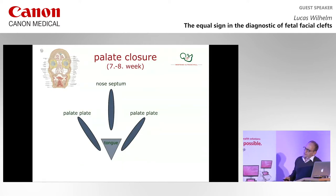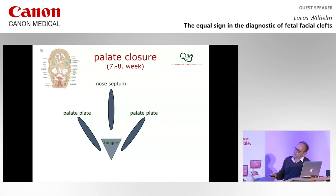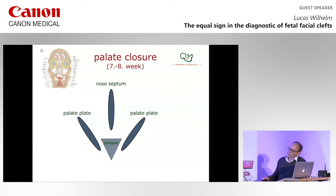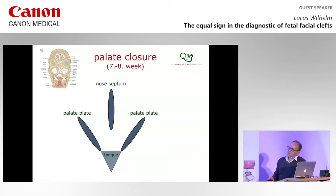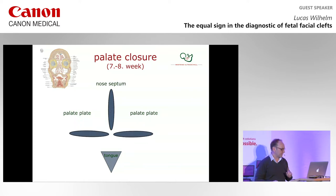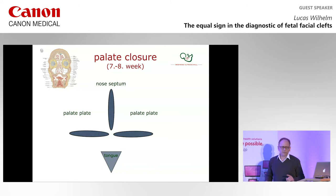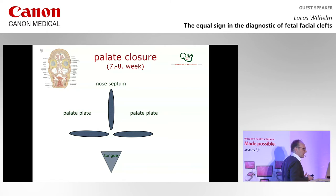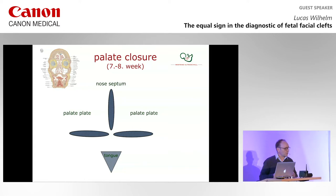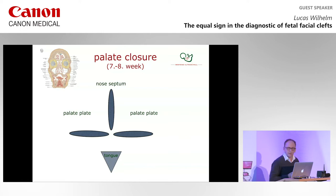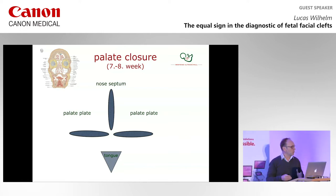This is a schematic representation of a coronal view in the seventh week of gestation. You see the nasal septum, the palate plates of both sides, and the tongue. The first step is the tongue has to sink down, then the palate plates can straighten up and the closure of the palate can start. The sinking of the tongue depends on the size and growth of the mandible.